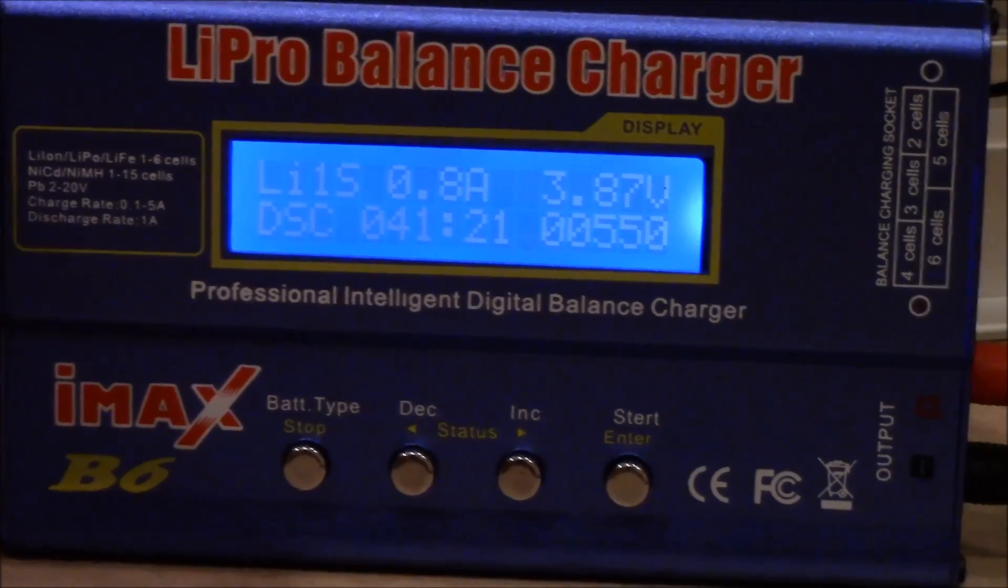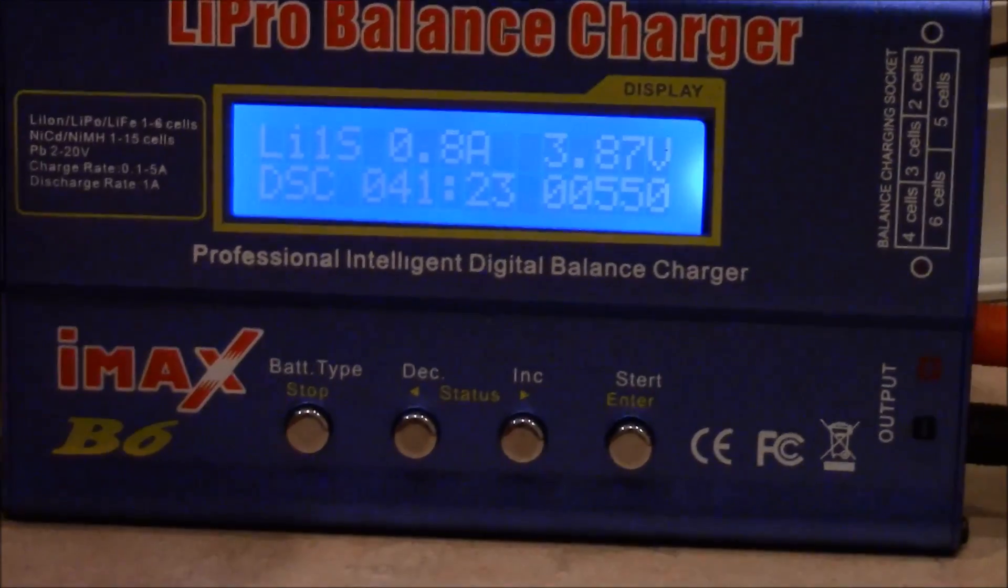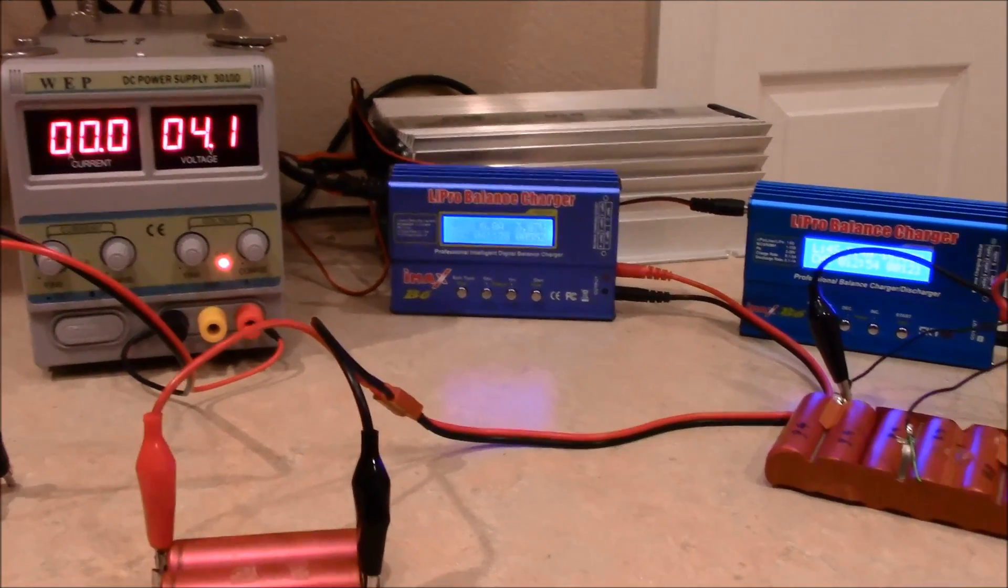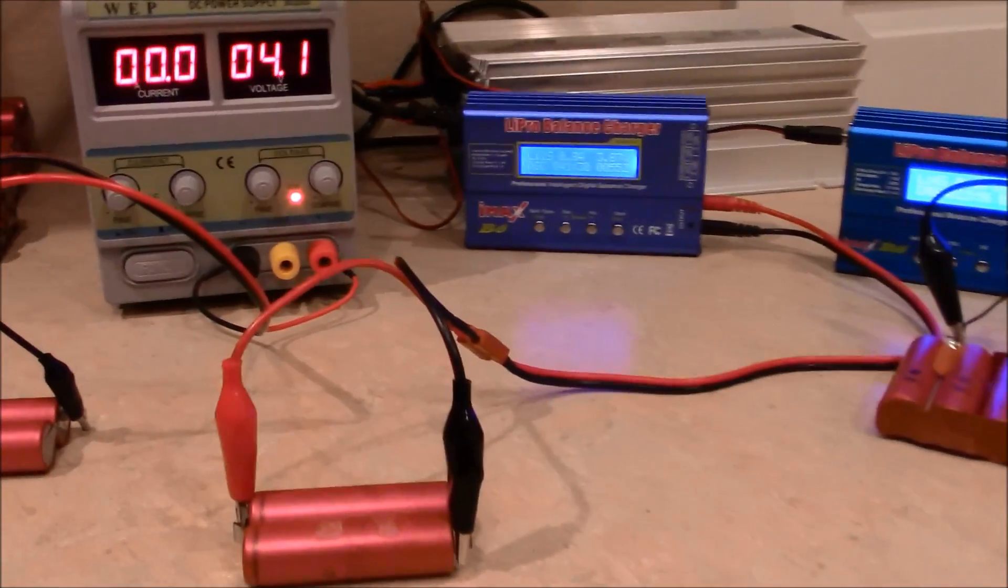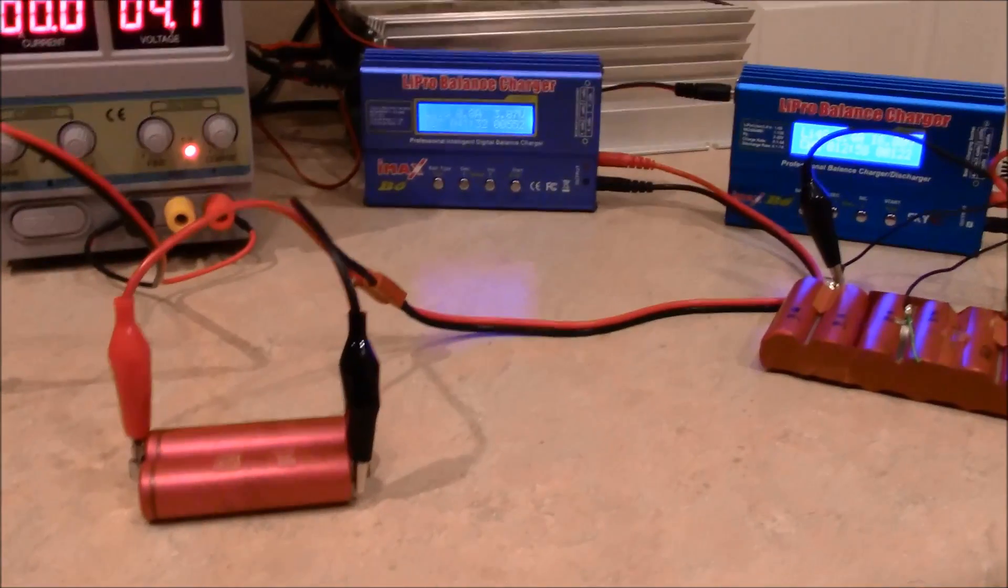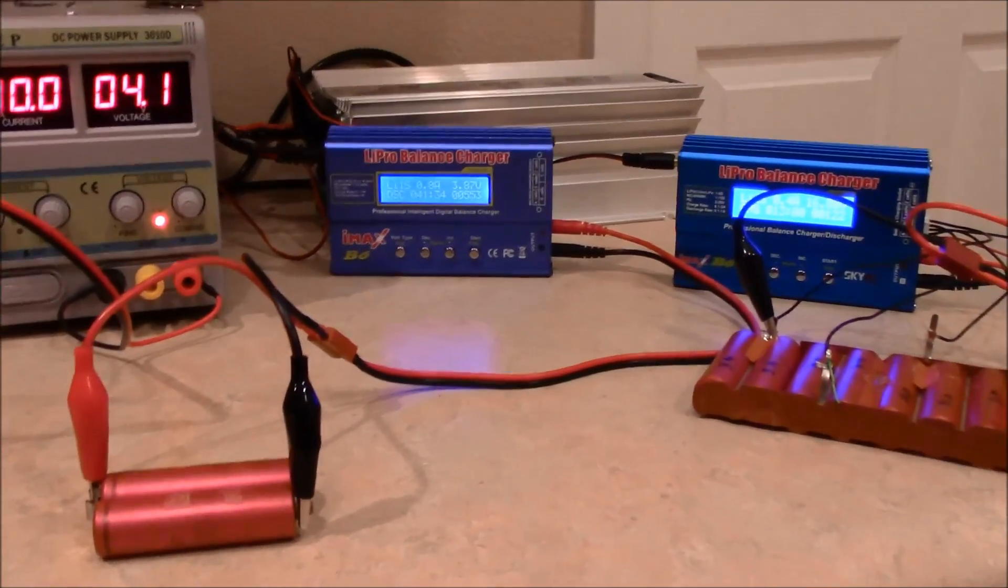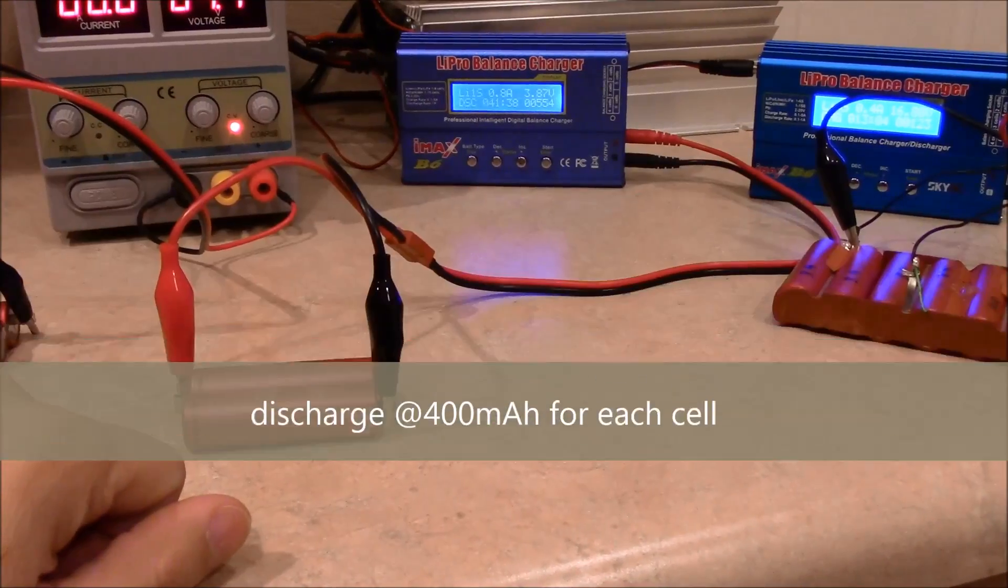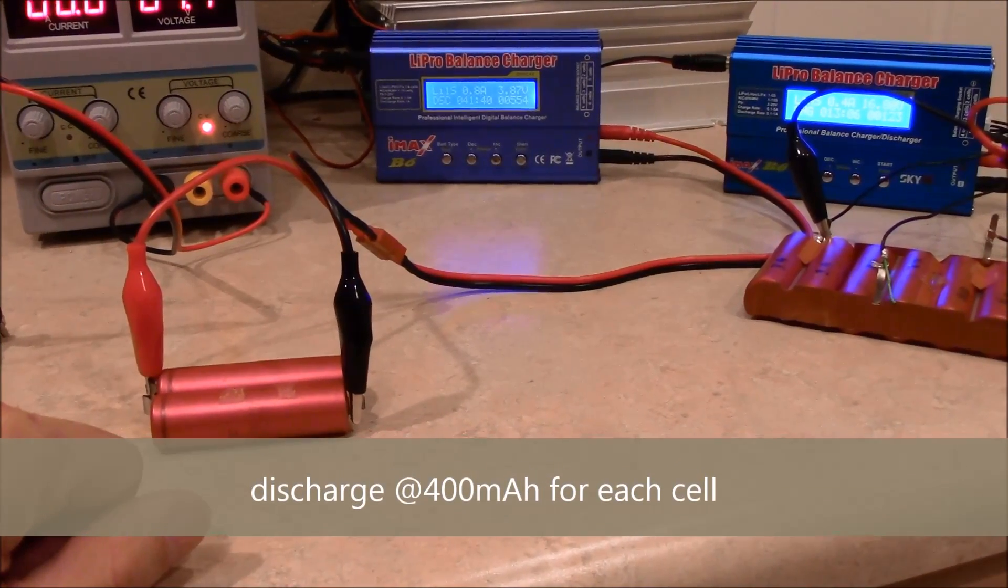I've got it at 0.8 of an amp on discharge just because if you look at the specs on these batteries, they don't really recommend discharging at one amp. You won't really get a true reading. They say to discharge each cell at around 0.4 milliamp, so that's what I'm doing now to get a better number for my cells here.